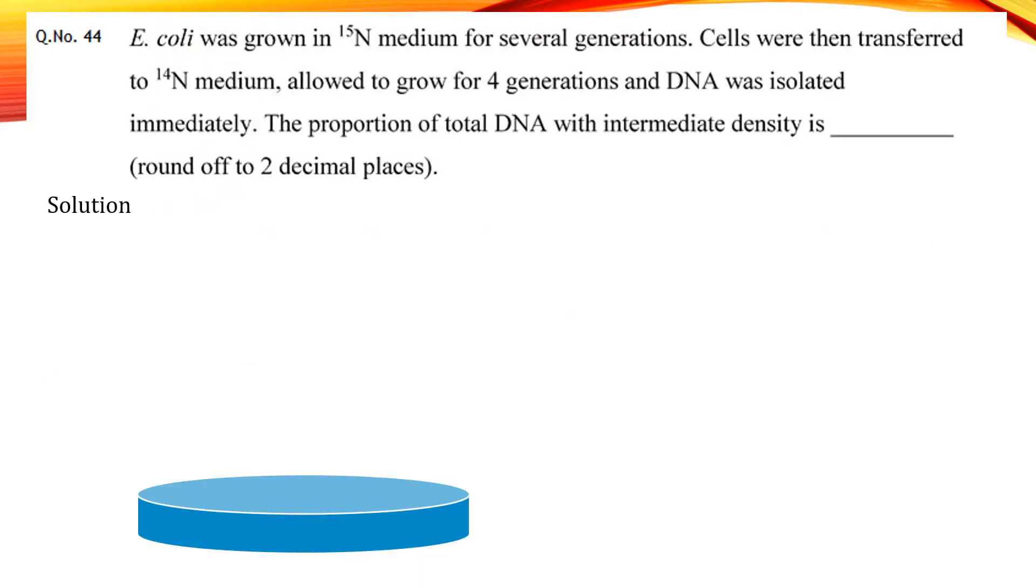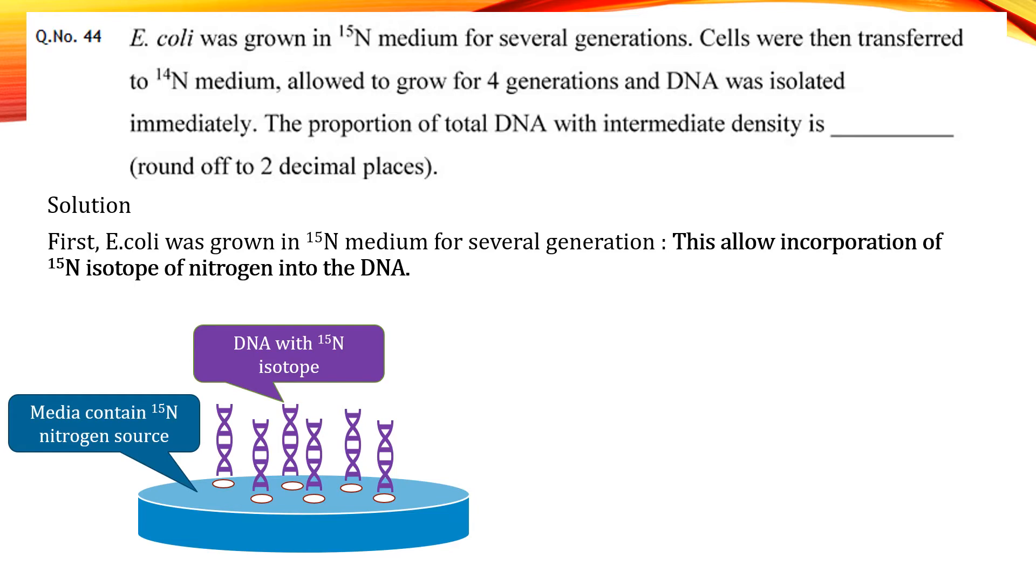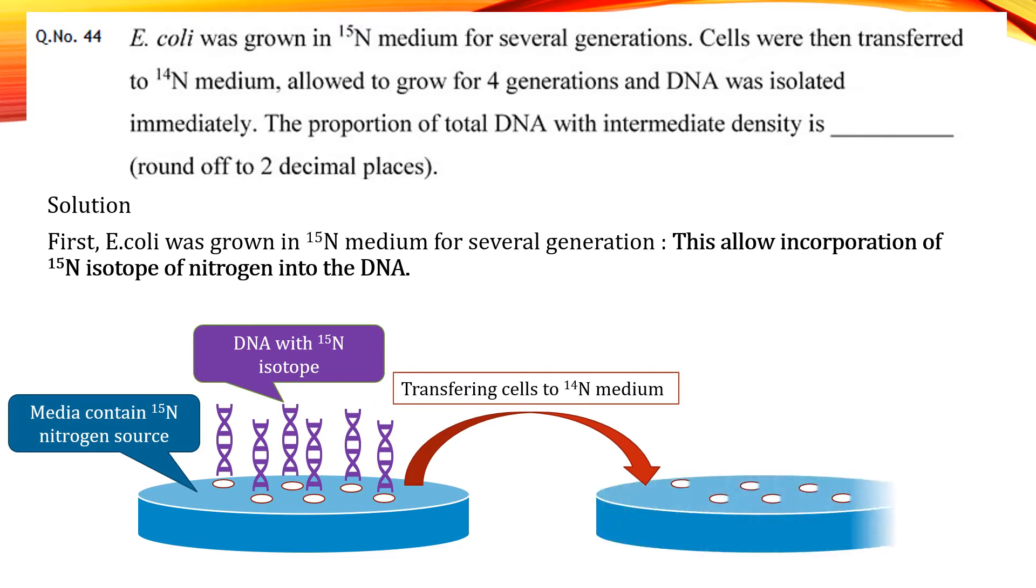According to the question, E.coli cells first grown in N15 medium, which results in incorporation of N15 into their DNA. As you can see in these images how cells were grown in N15 medium first and then transferred to N14 medium.